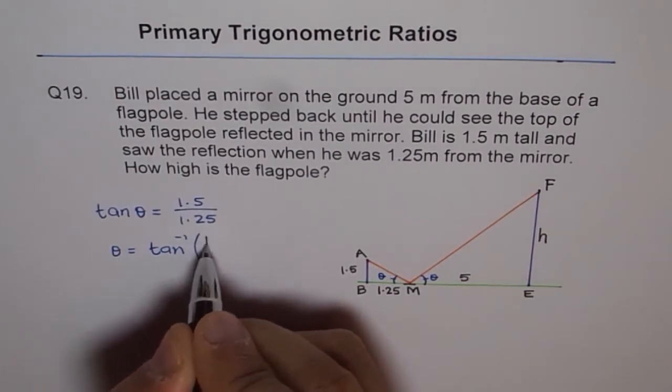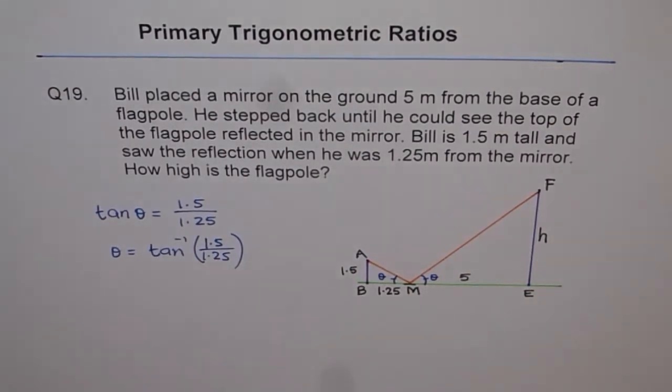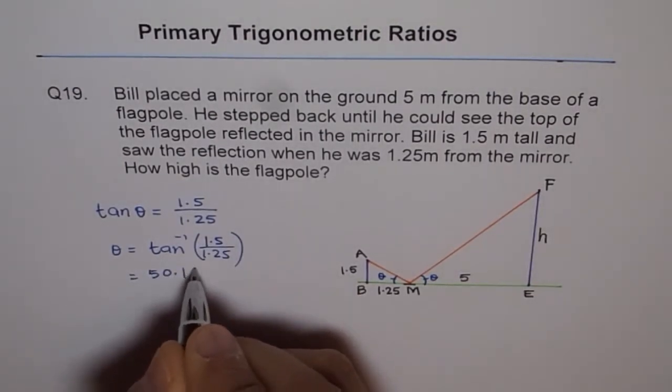Let's use the calculator. Second function, tan inverse, 1.5 divided by 1.25 in brackets, equals 50.19. So theta is 50.19 degrees.